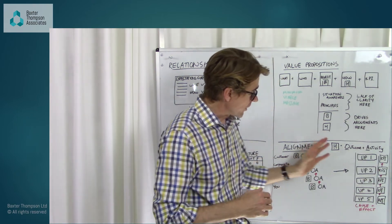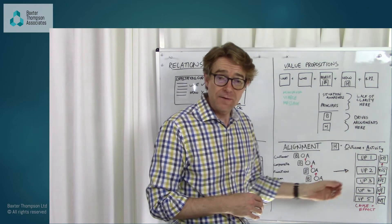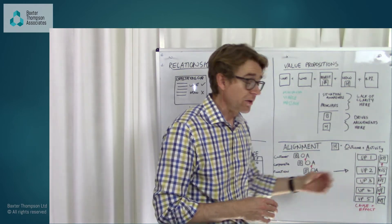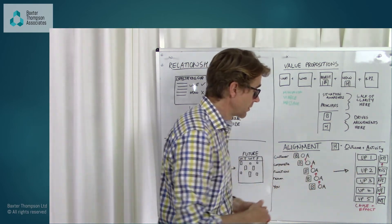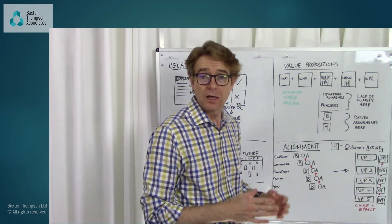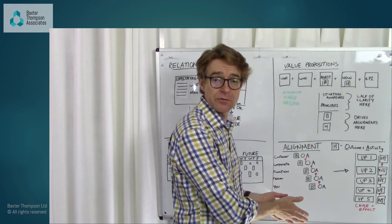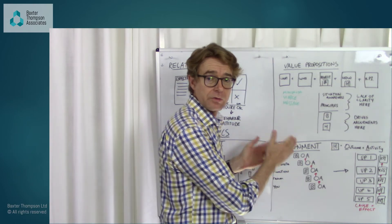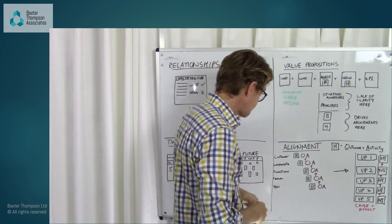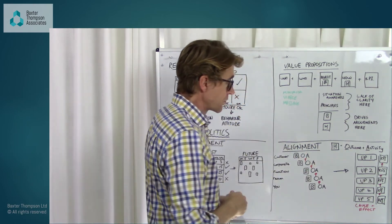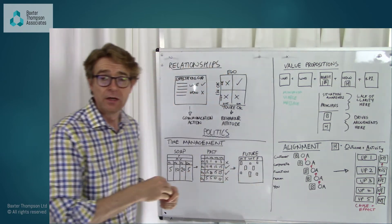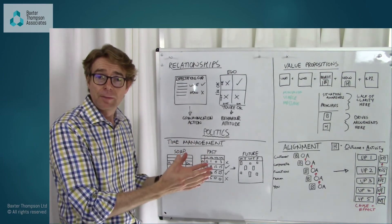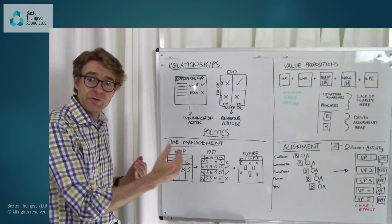So if we use this alignment template, we develop a value proposition and we have the commensurate KPIs associated with them, then we can demonstrate to people how an individual set of activities works all the way to the final outcome of satisfying those needs that the customer has. So that's a brief summary really of the four previous episodes, which fundamentally talk about alignment from different perspectives.